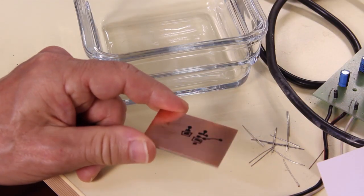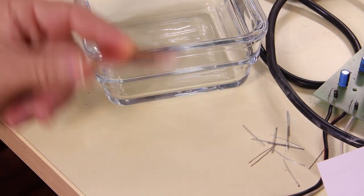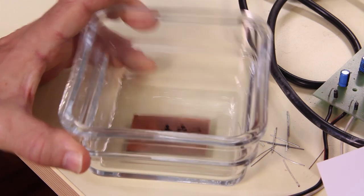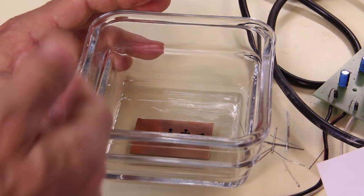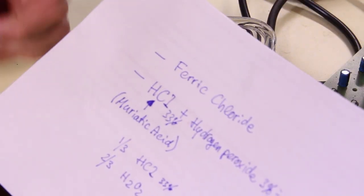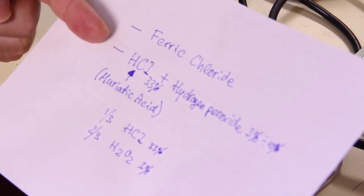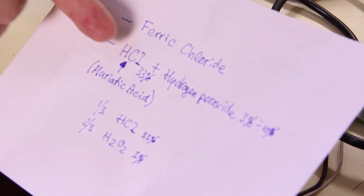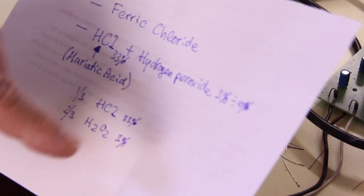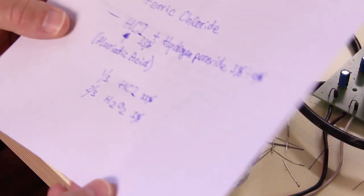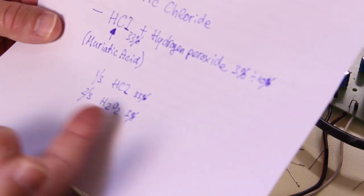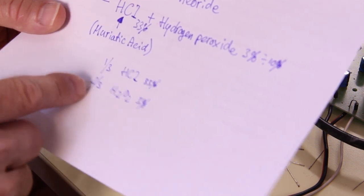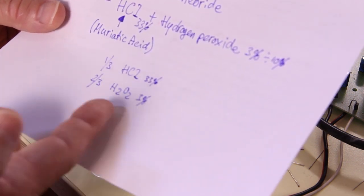You can put the circuit board into a little vessel with some acid to etch it. The acid could be ferric chloride or a mixture which I prefer: a mixture of hydrochloric acid and hydrogen peroxide, three or ten percent. With three percent, which is more common, you can use one-third of muriatic acid and two-thirds of hydrogen peroxide.